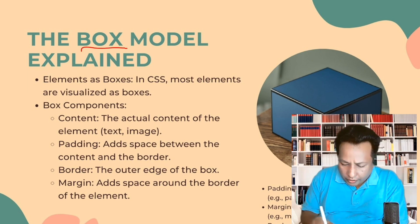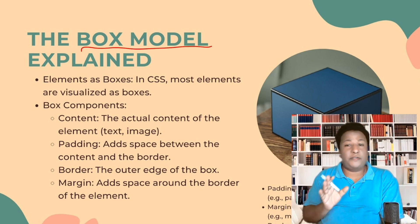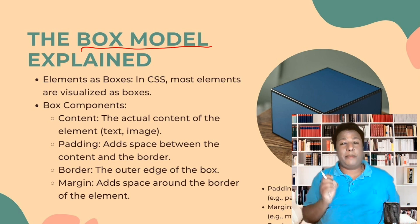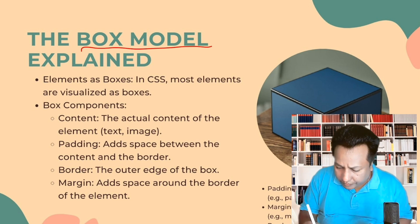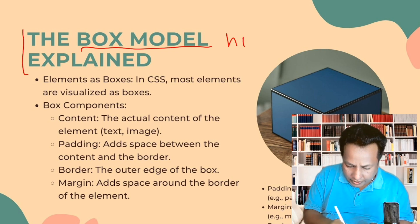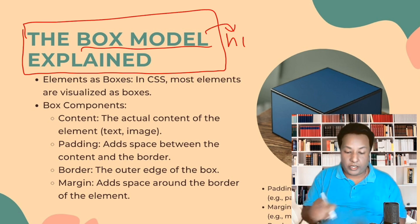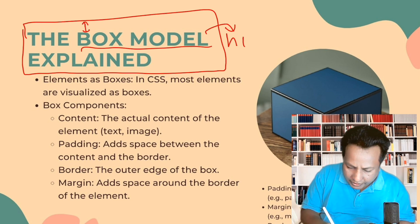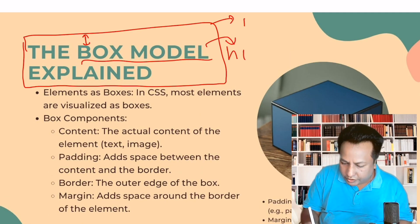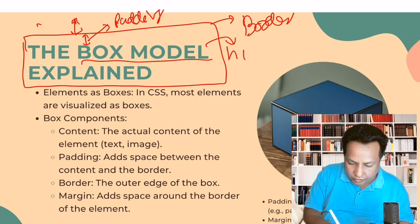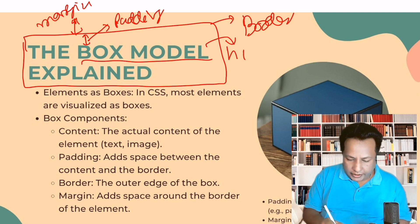The next concept is the box model, which is very, very important in CSS. Every element is itself a box. Let's say we have an h1 tag with some heading text — that text is the content of the h1 tag. In the box model, there is a gap between the text and the border. That red line is the border, the space between the content and the border is called padding, and the extra space outside the border is called margin.